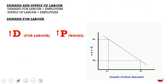The demand and supply of labor: your demand for labor refers to your employers and the supply of labor refers to your employees. When your demand for labor increases, your price or your wage will decrease.